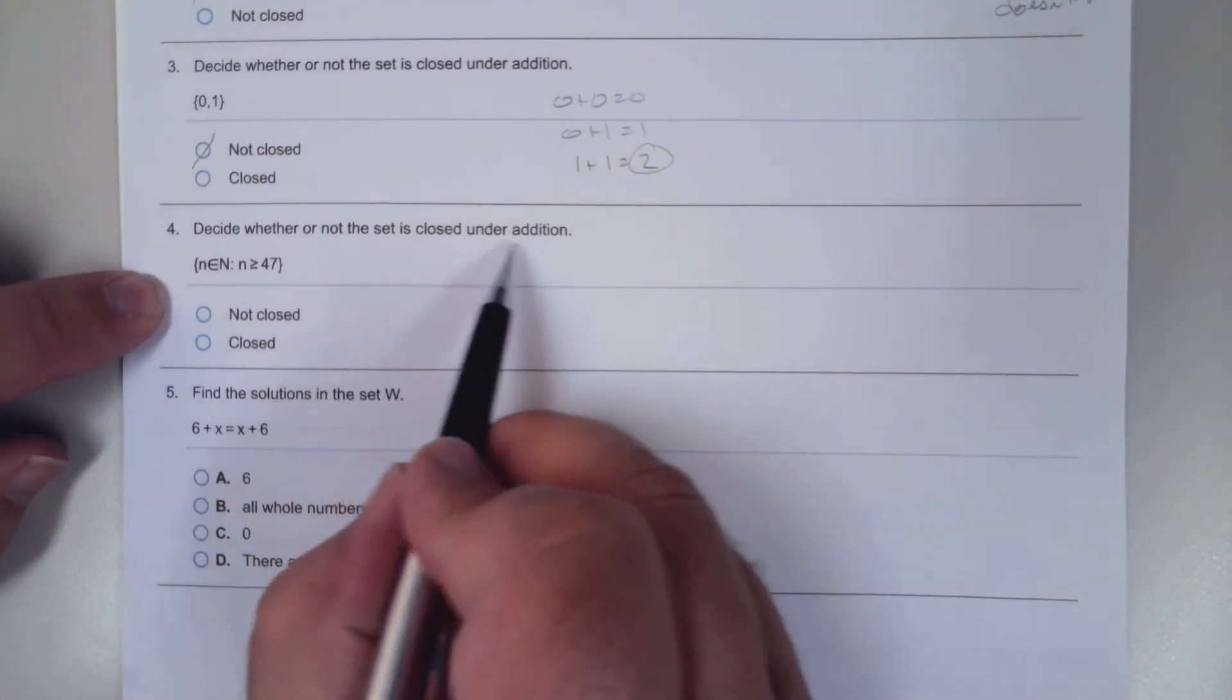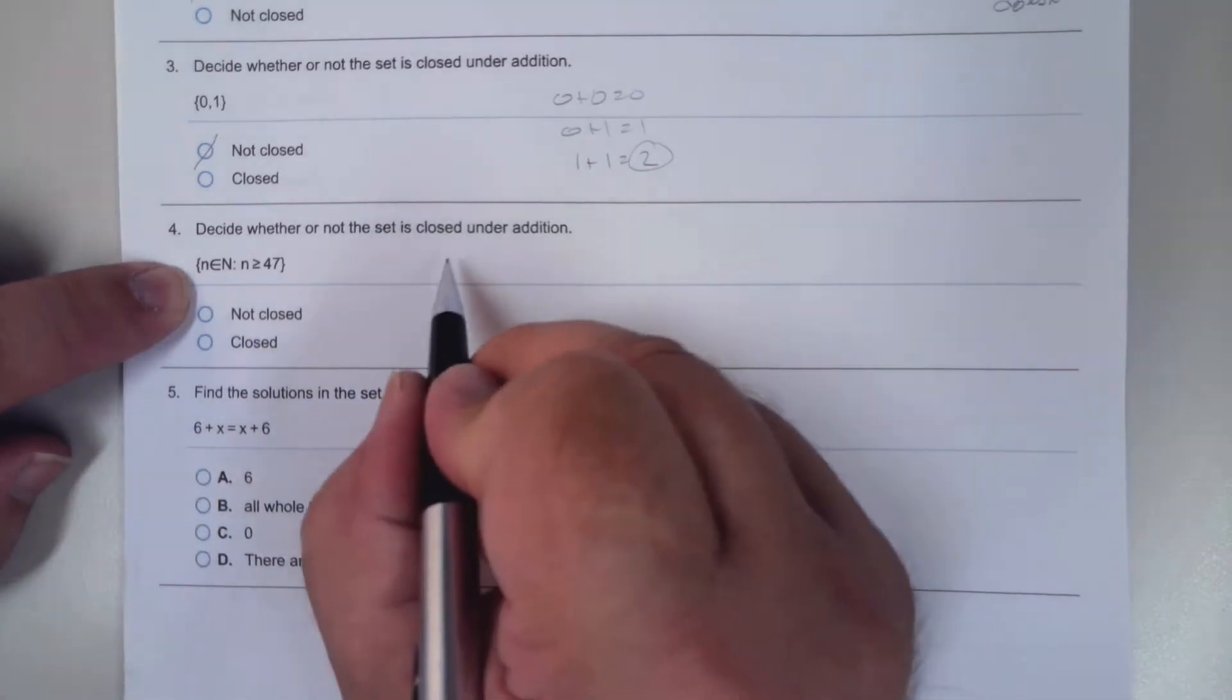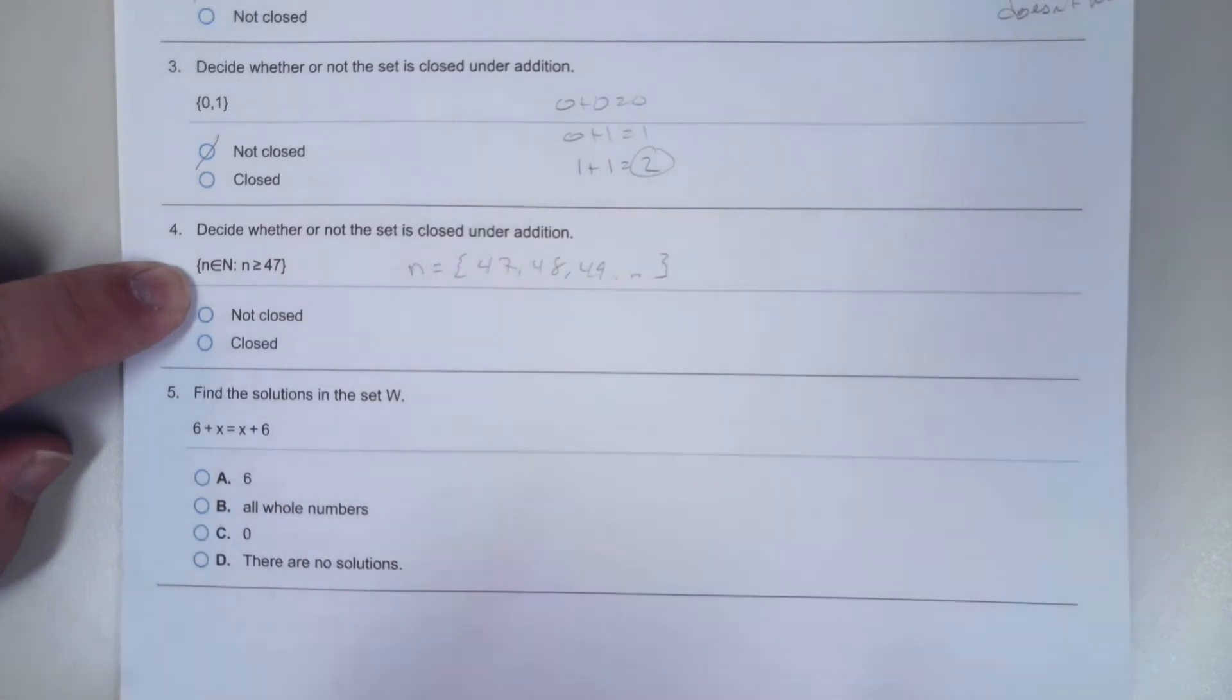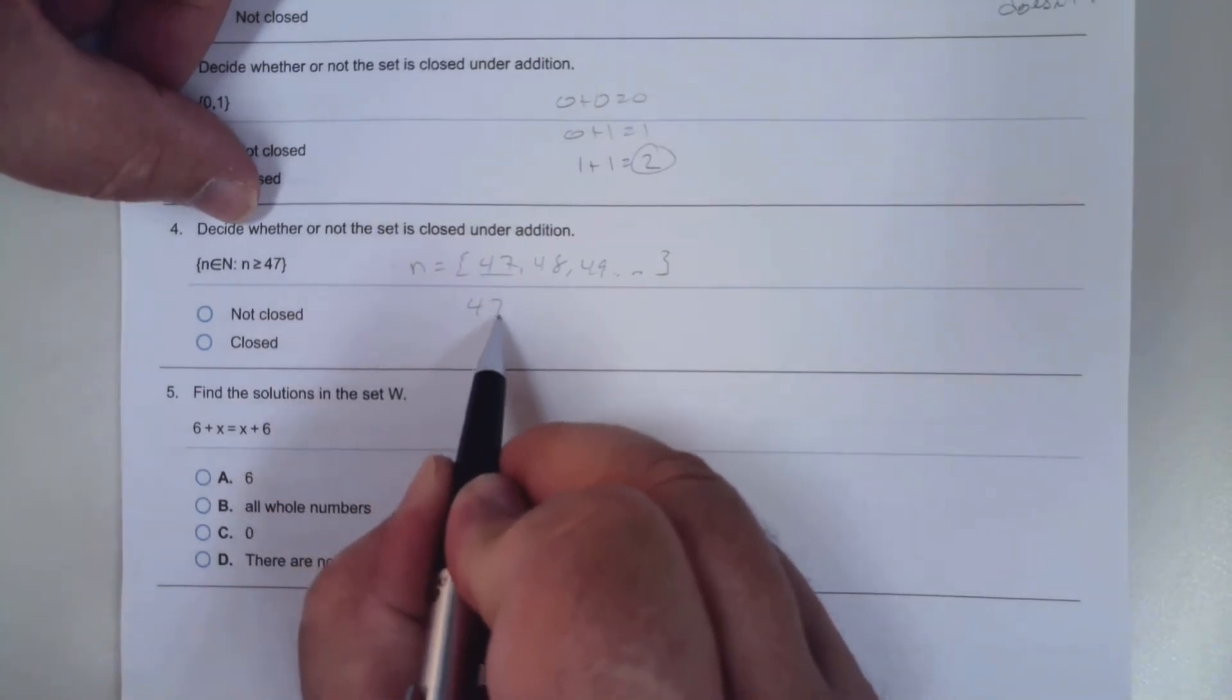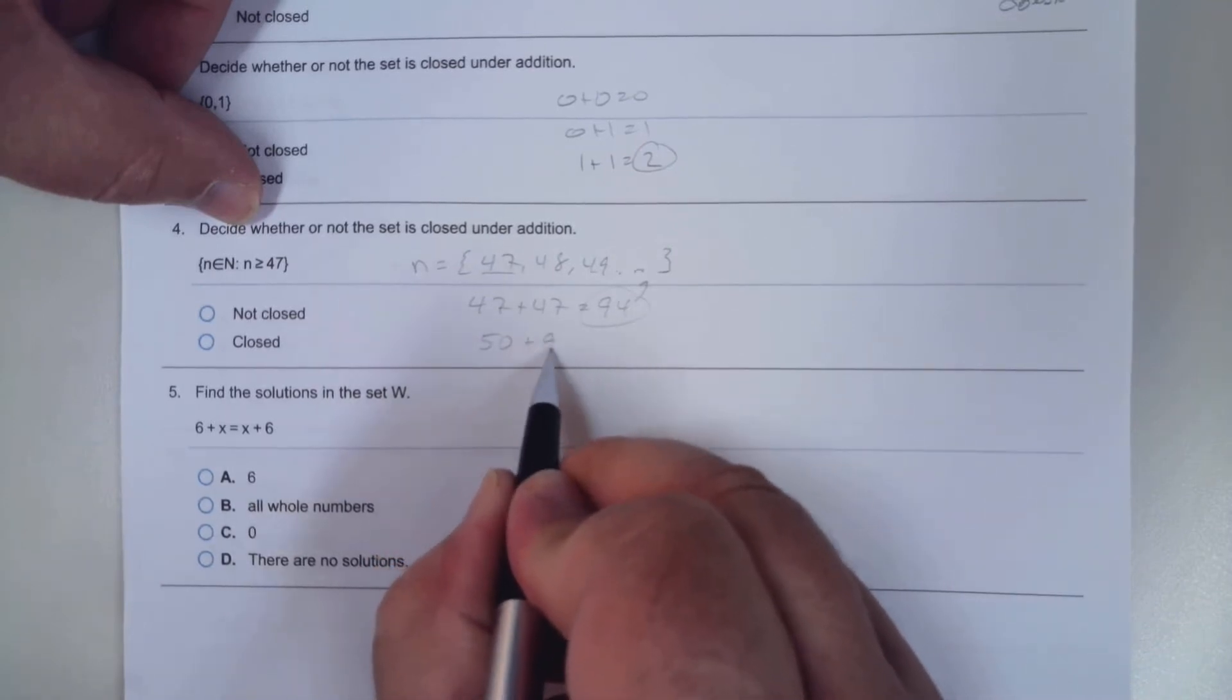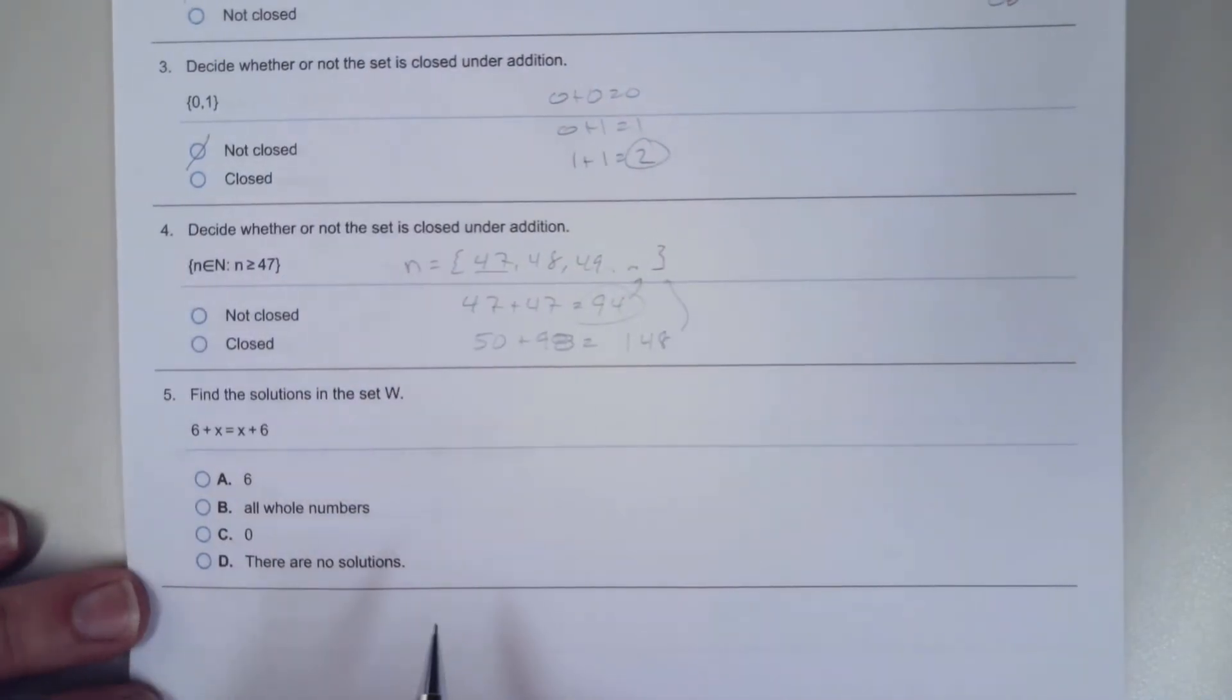Decide whether or not the set is closed under addition, where n is an element of the natural numbers, remember the counting numbers, and n is greater than or equal to 47. So n can be anything from 47, 48, 49, and so on. If I take 47 plus 47 is 94, is 94 in the set? Yes. 50 plus 98 is 148, that's in there, it's a counting number, so it's closed.